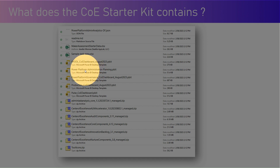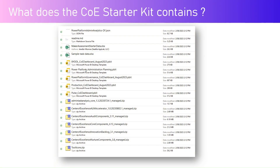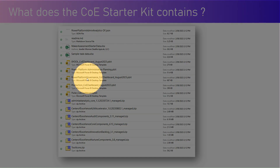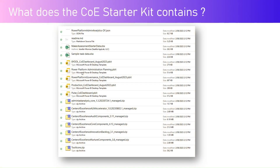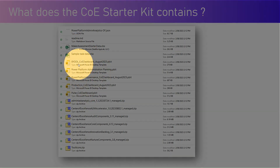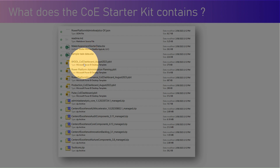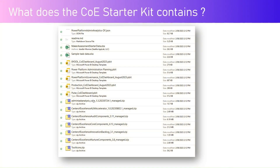Power Platform Administration Planning is all about setting up a planning mechanism within your Power Platform environment. It helps you understand how many tasks exist within a Power Platform administration purview, and you can import those tasks using supported Excel files like a sample task data file.